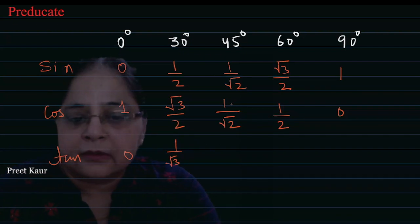Tan 45 degree: 1 upon root 2 divided by 1 upon root 2 is 1. And tan 60 degree is root 3.